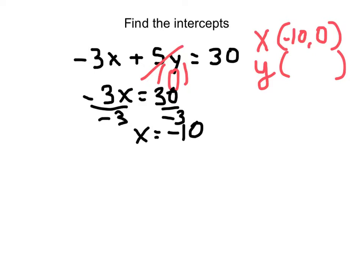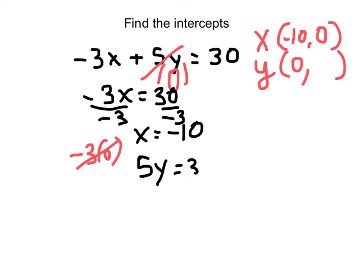Now let's find the y-intercept by substituting 0 in place of x. The x-term drops out, and what remains is 5y equals 30. Dividing both sides by 5 gives y equal to 6. So, what do you think? It's not too difficult, huh?